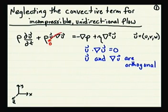We can think about this in a couple of different ways. First, we can think about this spatially in terms of orthogonality of vectors, and also we can take any specific case and evaluate u dot grad u specifically to show that it's equal to zero.